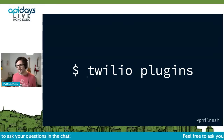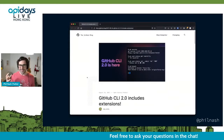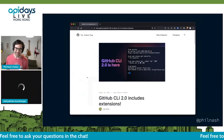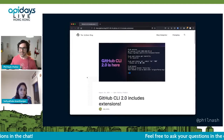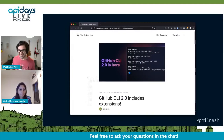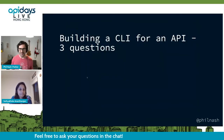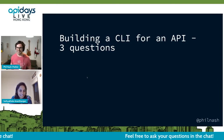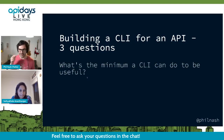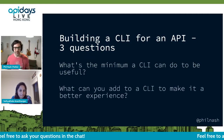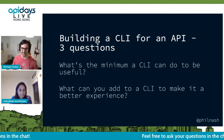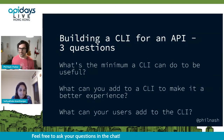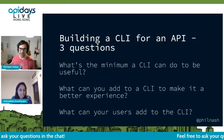Just today I learned we're not the only people who think this — I believe it was yesterday that GitHub announced version 2.0 of their CLI, and the headline says GitHub 2.0 includes extensions. So you can go write your own GitHub CLI extensions as well as Twilio CLI extensions if you're interested. I'm just wrapping up now to remind you of those three questions I asked at the start: what is the minimum we can do to be useful, what can we add to the CLI as a core team, and what can users add to it? If you put those things together, I think you end up with a great developer experience.